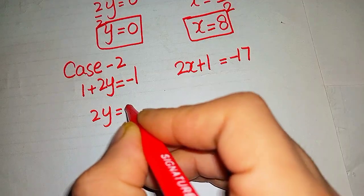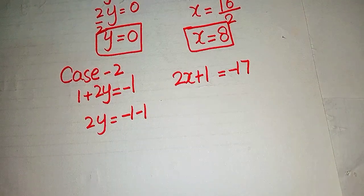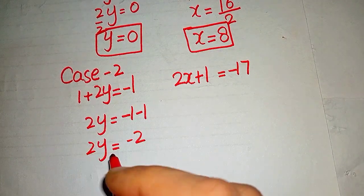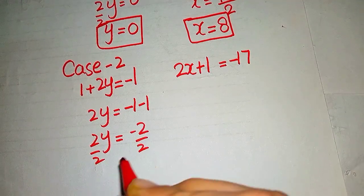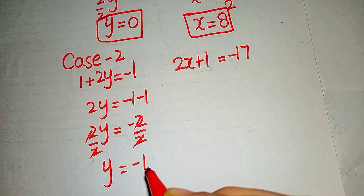2y = -1 - 1, so 2y = -2. When divided both sides by 2, the value of y = -1.